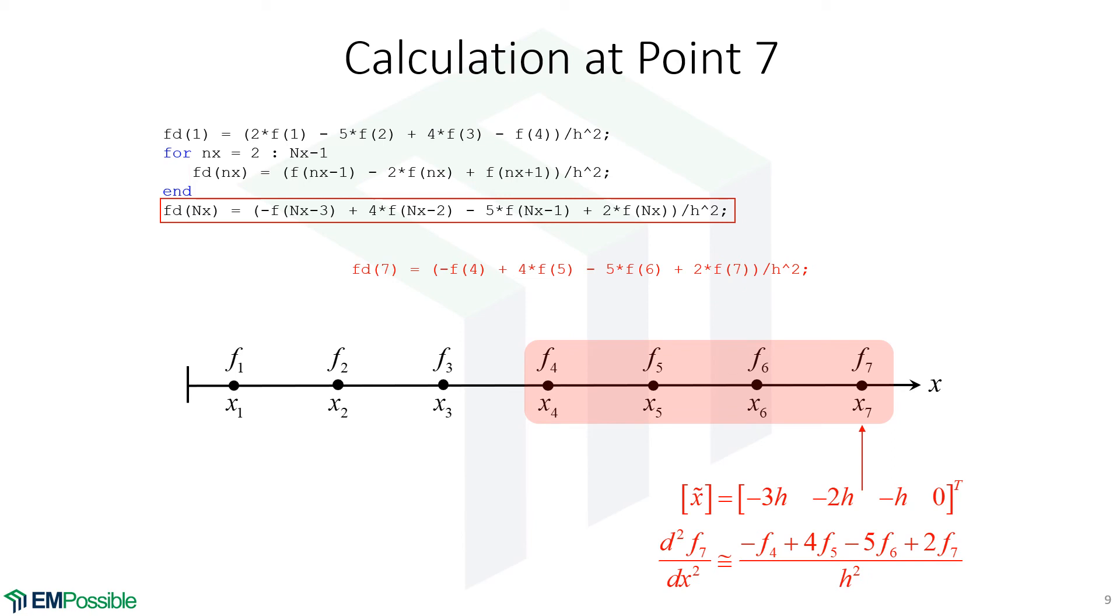So we've finished the loop, and there's the last line of code where that last point gets its own special finite difference. Here's our offset points we use to derive that finite difference, and here's our finite difference approximation we apply to the last point. And I definitely recommend staring at this equation and looking at the MATLAB code and seeing how that's implemented.